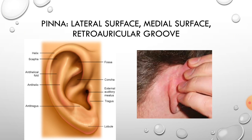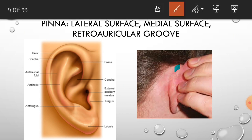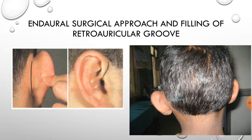The auricle has two surfaces: the lateral or external surface and the medial or cranial surface. Behind the ear, between the head and the cranial surface of the auricle, is a groove called the retro-auricular groove. This retro-auricular groove is of clinical significance because it gets filled up in some disease conditions of the ear — when there is swelling or inflammatory conditions, this groove is no longer visible behind the ear.